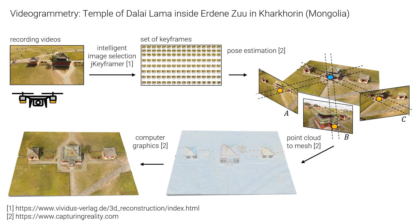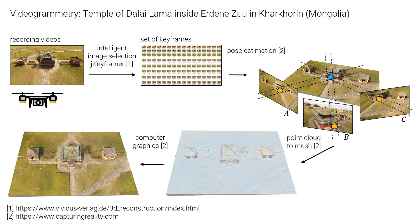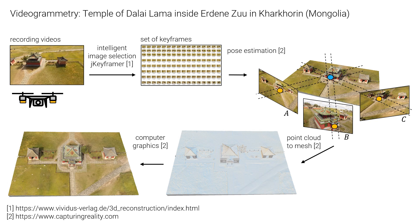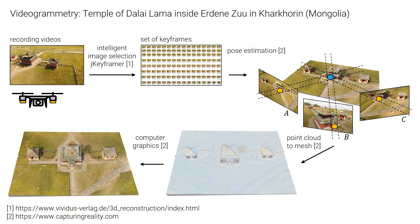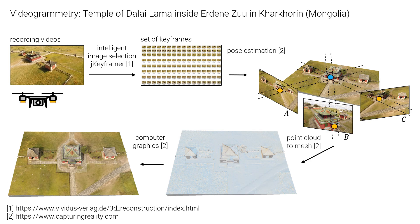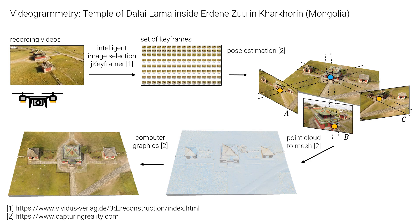Here we see, as an example, the temple of the Dalai Lama and the work steps that are necessary to derive a virtual 3D model from a video. In this example, we use photogrammetry to do this. With photogrammetry, we try to derive the structure from a set of photos showing a rigid object from all sides, and thus create a virtual copy of the object.